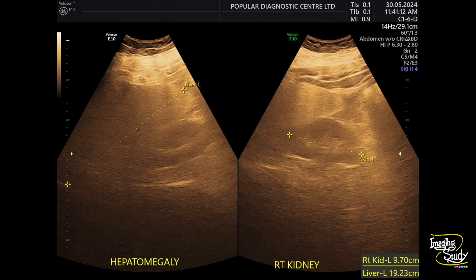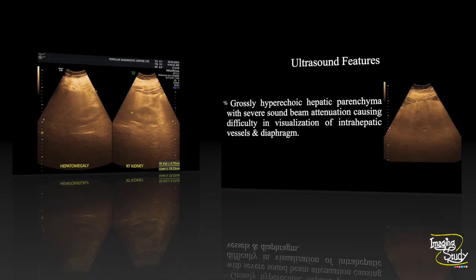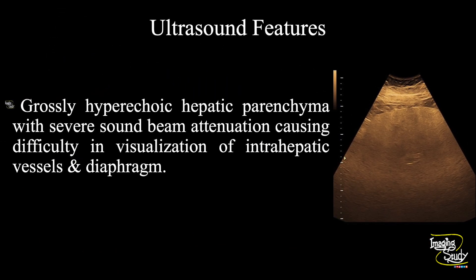Whatever measurement you follow, make sure that CT will give you the best measurement in severe hepatic steatosis cases. In summary, grossly hyperechoic hepatic parenchyma is noted with severe sound beam attenuation, causing difficulty in visualization of intra-hepatic vessels and diaphragm, suggesting this as a case of severe fatty change in liver — or severe hepatic steatosis — that means grade 3 hepatic steatosis.